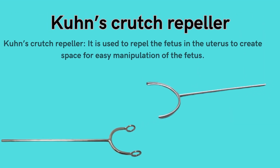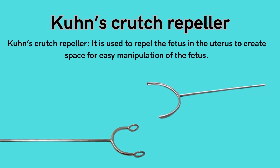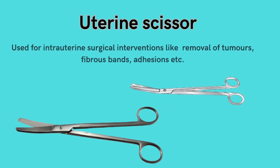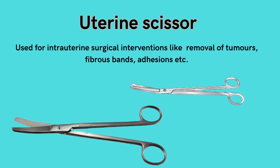Kuhn's crutch repeller: used to repel the fetus in the uterus to create space for easy manipulation of the fetus. Uterine scissor: used for intrauterine surgical interventions like removal of tumors, fibrous bands, adhesions, etc.